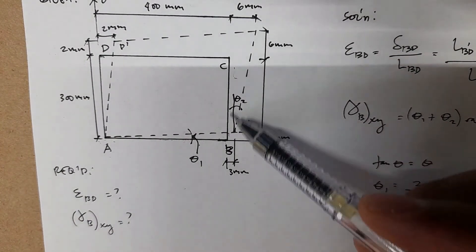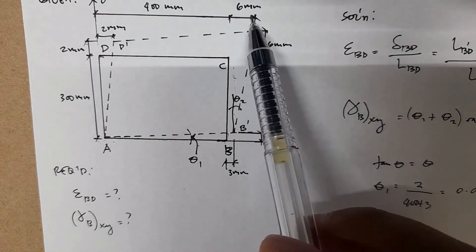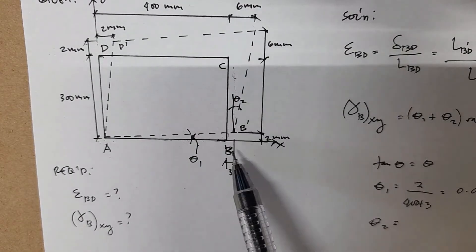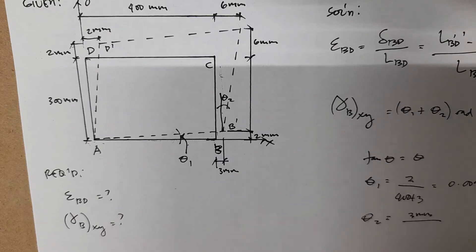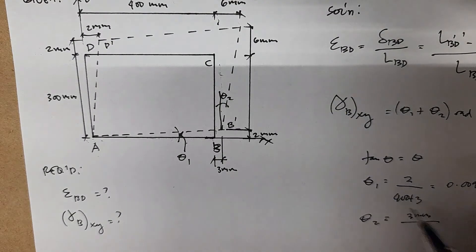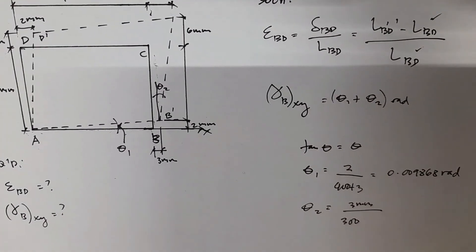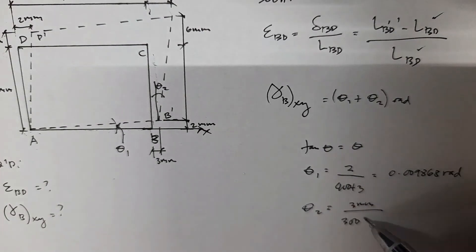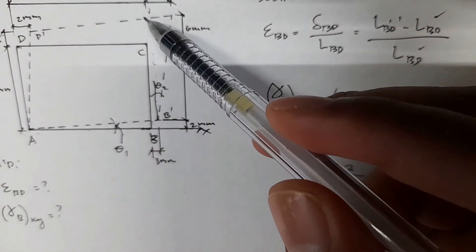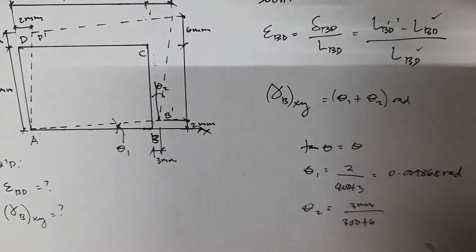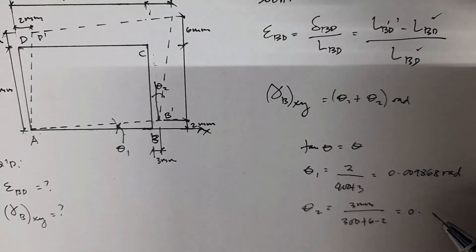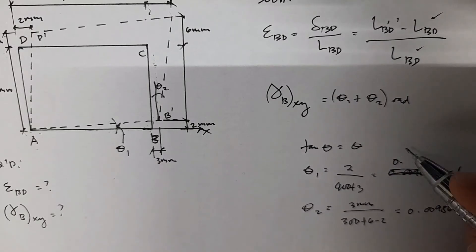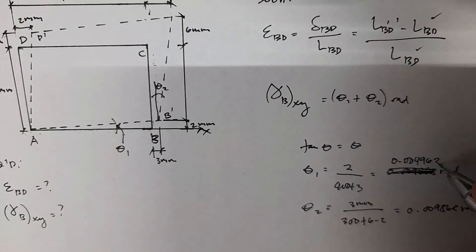For theta 2, the opposite side is 6 minus 3, which equals 3, and the adjacent side is 300 plus 6 minus 2, which is 304. So theta 2 equals 3 divided by 304, which equals approximately 0.004963 radians. Note: an earlier stated value of 0.009868 was a correction.